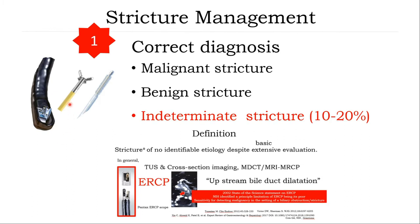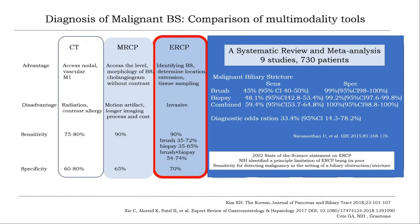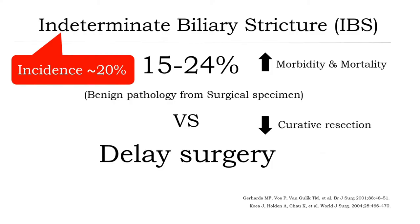Generally, ERCP allows steps to get diagnosis and drainage in the patient. However, you can get indeterminate stricture in 10 to 20 percent of cases. The reason is that ERCP technology is still limited in terms of sensitivity — even combining modalities gives only up to 60 percent sensitivity. If only standard equipment is available, it is difficult for the patient and clinician to make decisions, as waiting may delay and lose the chance of curative resection, while moving to surgery may increase risk of morbidity because it may be a benign situation.